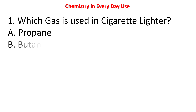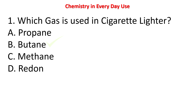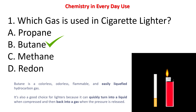First question: which gas is used in cigarette lighters? Options: propane, butane, methane, radon. The answer is butane. Butane is a colorless, odorless, and flammable, easily liquefied hydrocarbon gas. It is a good choice for lighters because it can quickly turn into a liquid when compressed and then back into gas when pressure is released — that is why butane is used for cigarette lighters.